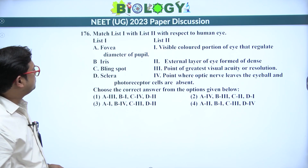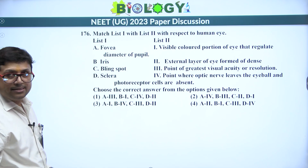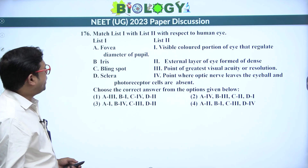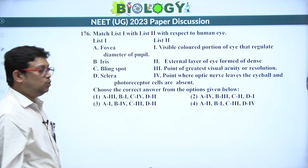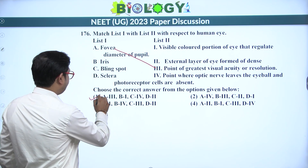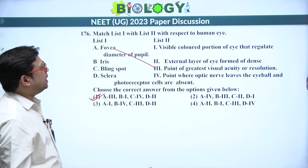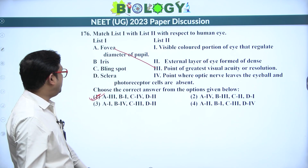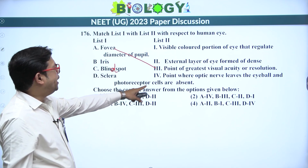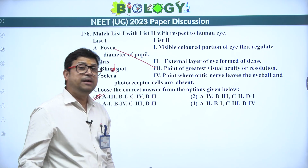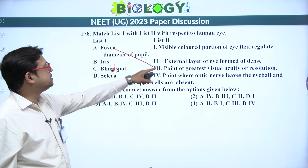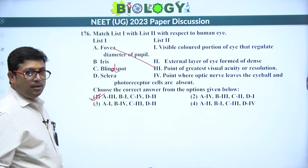Next: match the column for eye structures. Fovea centralis is present exactly opposite the lens where visual acuity is greatest because it is packed with cones — A is 3. Iris is the visible colored portion of the eye that regulates the diameter of the pupil. Blind spot is the point where the optic nerve leaves the eyeball — any image formed there cannot be seen. Sclera is the external layer of the eye formed of dense connective tissue.